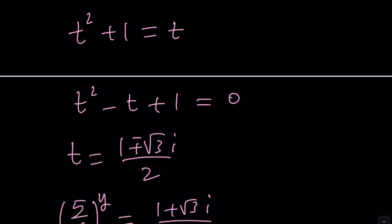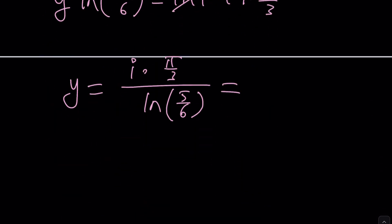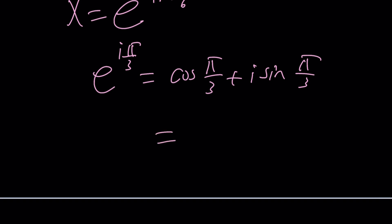We're not solving for y, we're solving for x. What is the relationship? Y is ln x. So let's set this equal to ln x. And x will be e to the power i pi over 3 over ln 5 over 6. E to the power i pi over 3 can be written as cosine pi over 3 plus i sine pi over 3. That will be cosine 60, which is sine 30, which is 1 half. I was about to write root 3, but it's 1 half. And this is root 3 over 2i.